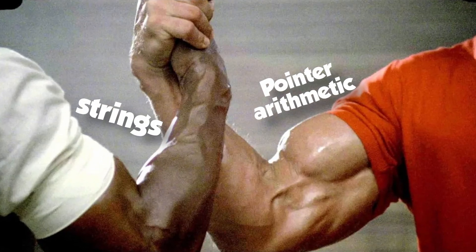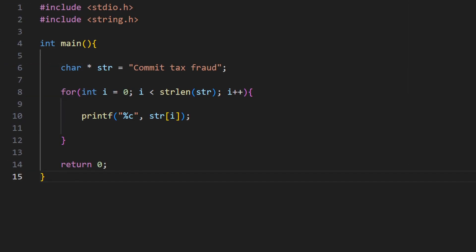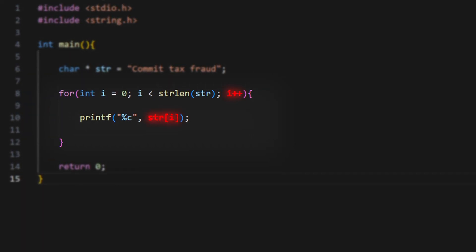It is also thanks to pointer arithmetic that we can print out strings. A string is just an array of chars, so to print it out, we just do a loop where we increment the pointer each time. This means that the program prints out each character in order right after one another.